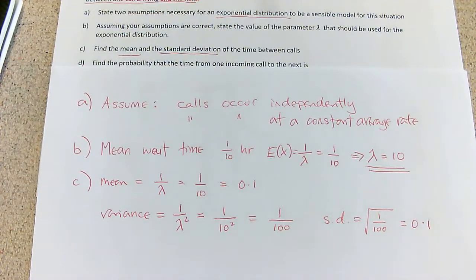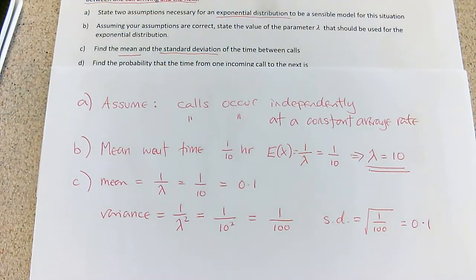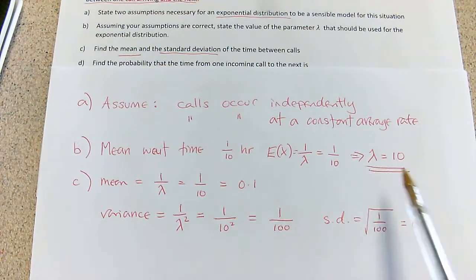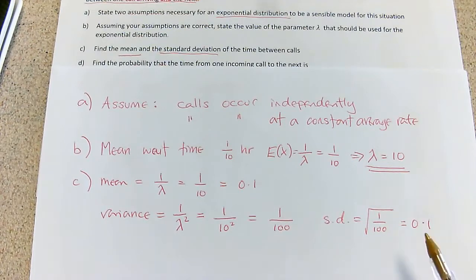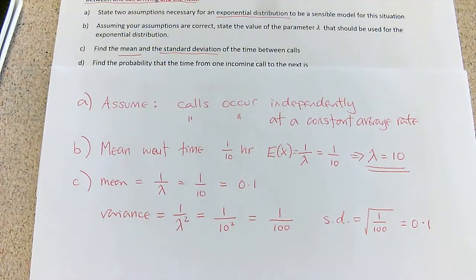This illustrates something always true for this distribution: the mean is always the same as the standard deviation. This might remind you of a Poisson, but it's not the same — with a Poisson, the mean is always the same as the variance, and they're both lambda. With the exponential distribution, the mean is always the same as the standard deviation, and they're both 1/lambda.